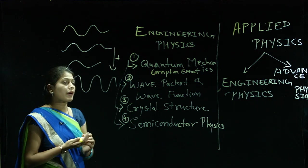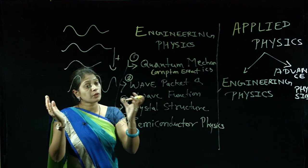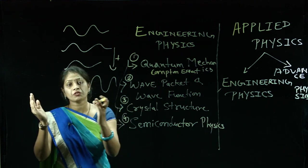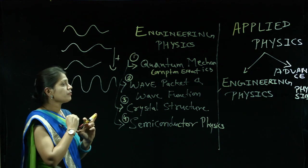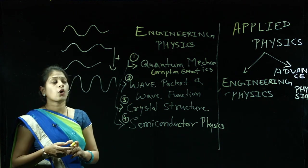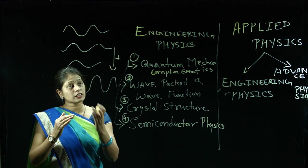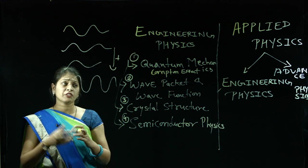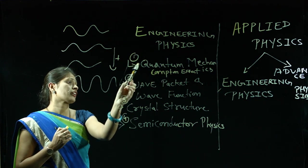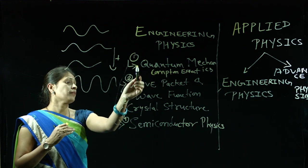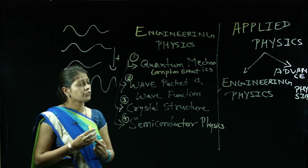Wave packet means the superposition — a combination of different waves of almost the same amplitude and almost the same frequency. This is called the wave packet. Wave packet and wave function are the second unit — the second step for Quantum Mechanics. The first step is Quantum Mechanics itself, and the second step is wave packet and wave function.